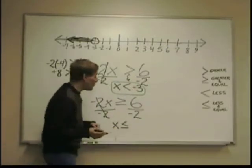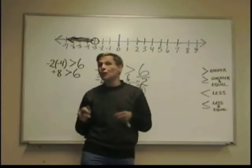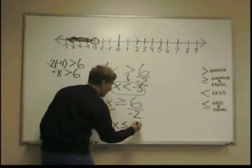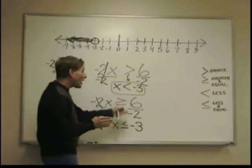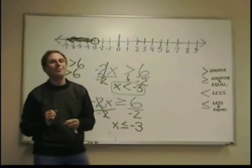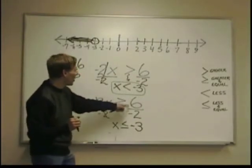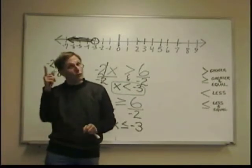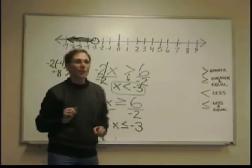6 divided by negative 2. Back to the rules of sign numbers. Unlike signs are negative. So again, it's negative 3. If the signs were the same, if you divide by two negatives, you're going to get a positive. Keep that in mind. But here the signs were unlike. So the answer was negative. Rules of division of sign numbers.